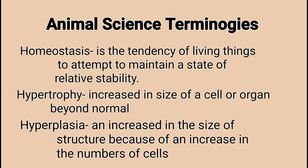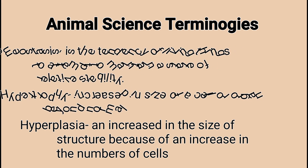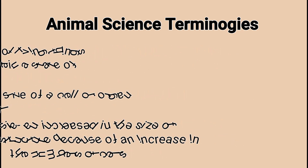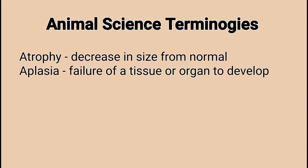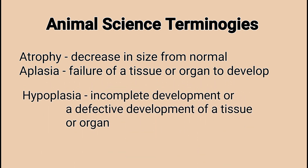Hyperplasia: an increase in the size of a structure because of an increase in the number of cells. Atrophy: decrease in size from normal. Aplasia: failure of a tissue or organ to develop.